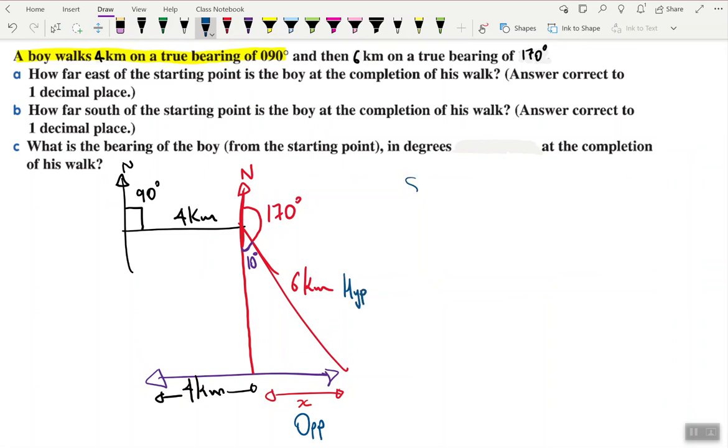Using SOHCAHTOA, I need to figure out which ratio to use first. I'm using hypotenuse and the opposite, so sine is the way. The other two I can't use because I don't need the adjacent. So sine of theta is opposite over hypotenuse. I'll sub the values. The angle is 10 degrees, the opposite is x what I'm looking for, over 6.